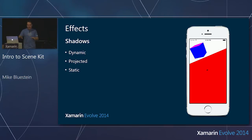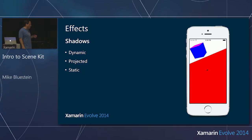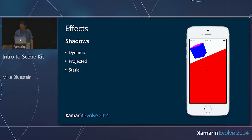There's also a projected shadow, which is sort of in between — it gives a dynamic effect but projects through a cylinder rather than casting a true shadow. In certain classes of games you can get away with that. I'm finding dynamic shadows working quite well even on iPhone 5, which I purposely brought rather than my new iPhone 6 Plus.